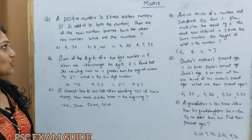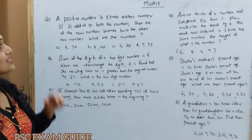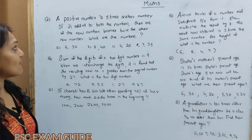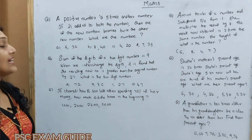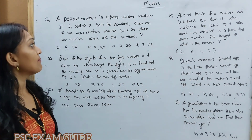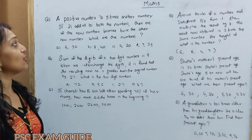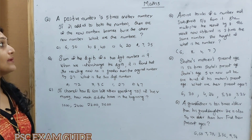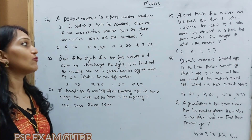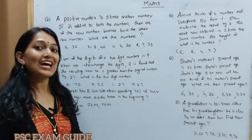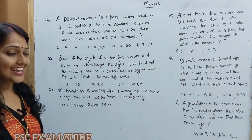First question: A positive number is 5 times another number. If 21 is added to both of the numbers, then one of the new numbers becomes twice the other new number. What are the numbers?